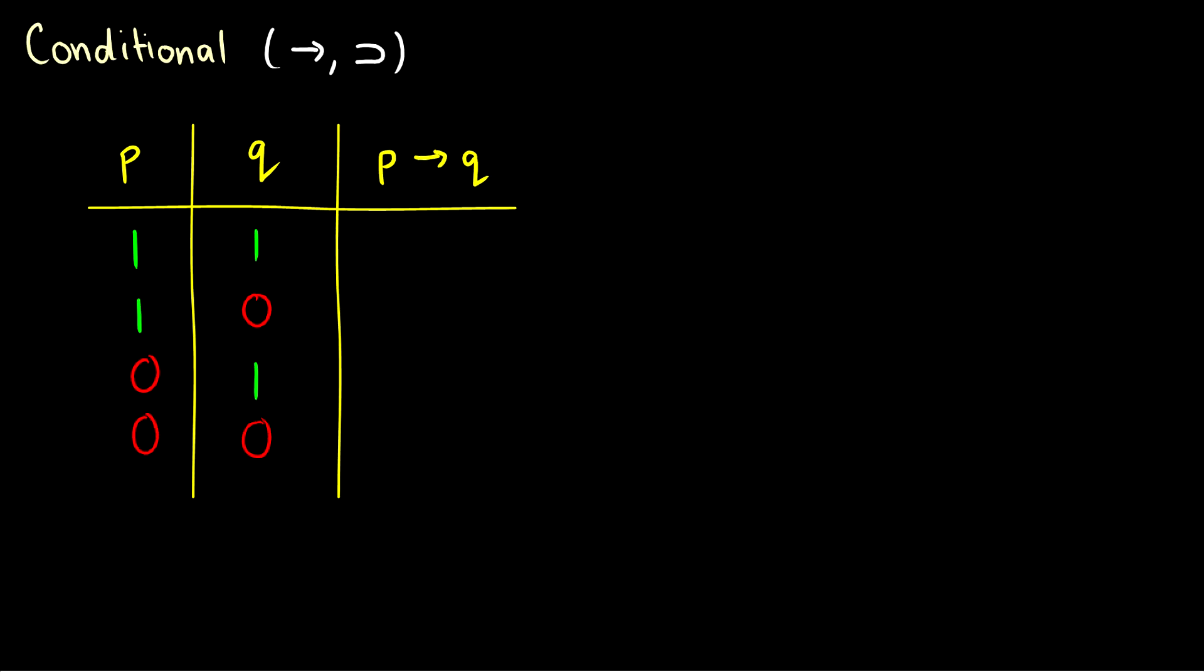Now what about the conditional? In the conditional we usually see the arrow, and occasionally we see the superset symbol, but this is more for philosophical logic and not seen too much in any math texts. So this is an interesting one. This is the truth condition for if p then q. And it is only false if p is true and q is false. The rest of the times it will be true. And this is kind of hard to wrap our brains around.